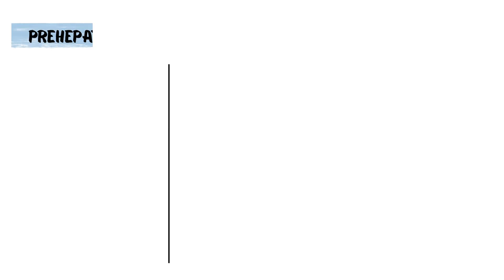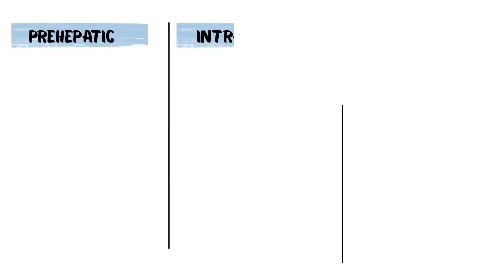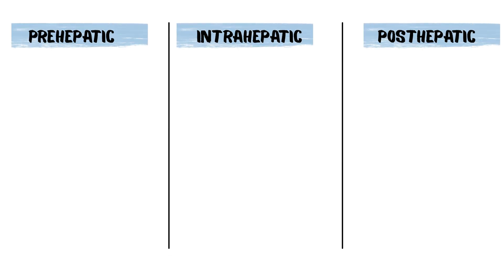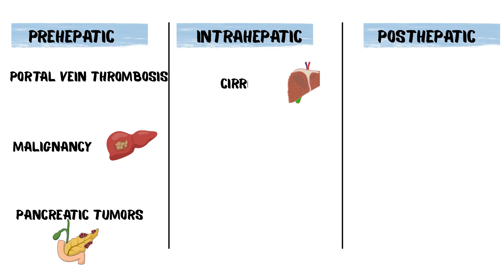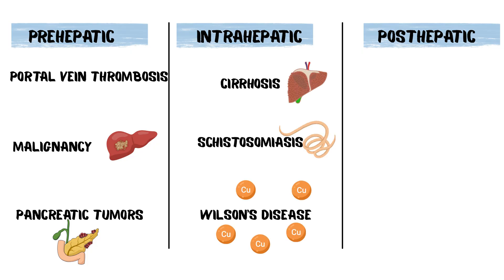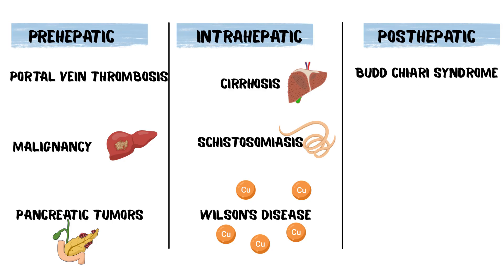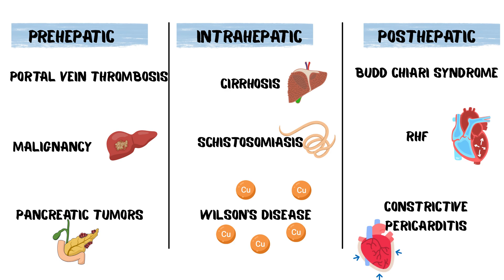Let's divide this into prehepatic, intrahepatic, and posthepatic. Prehepatic causes include portal vein thrombosis, malignancy, and compression from pancreatic tumors. Intrahepatic causes include cirrhosis, schistosomiasis, and Wilson's disease. Posthepatic causes include Budd-Chiari syndrome, right-sided heart failure, and constrictive pericarditis.